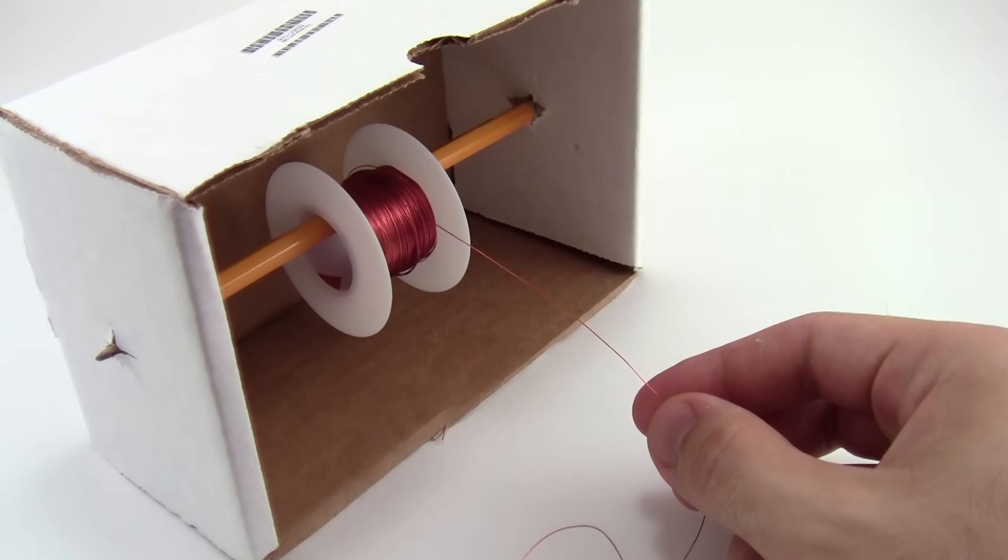To make winding your magnets easier, we recommend using something like a paper towel holder to hold the spool of wire. You can also improvise one using a pencil and a small cardboard box like this.